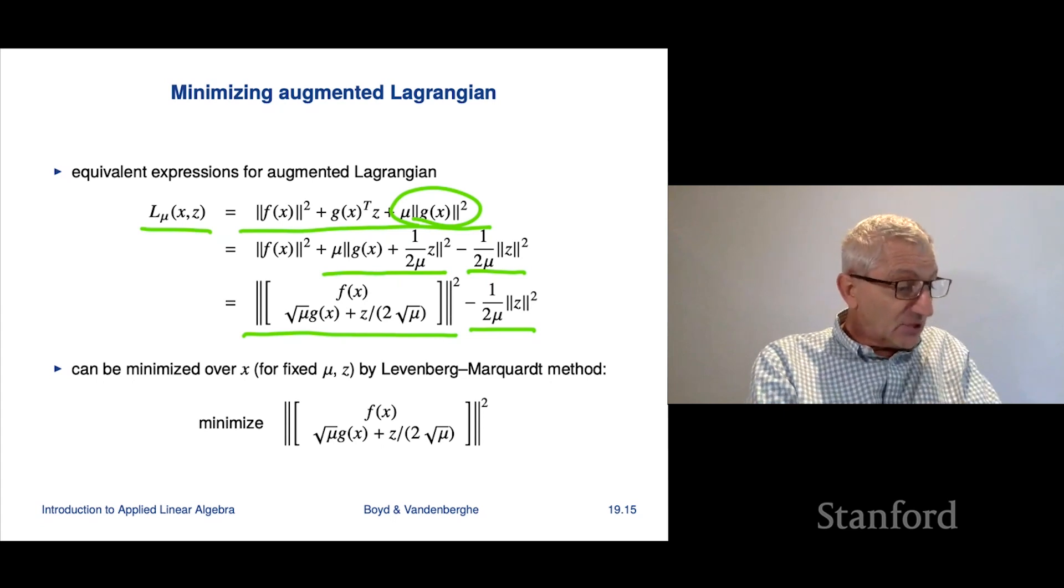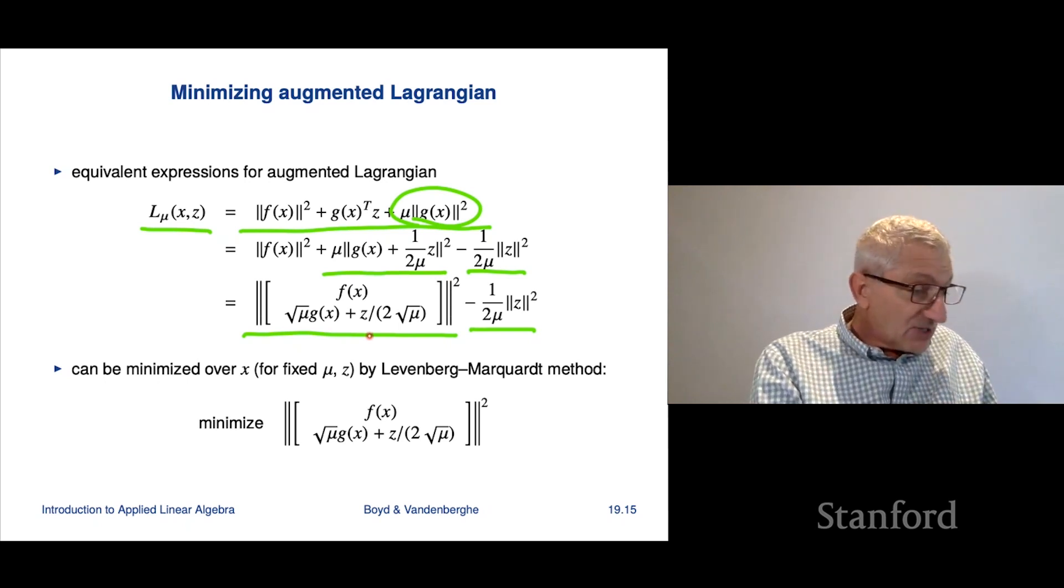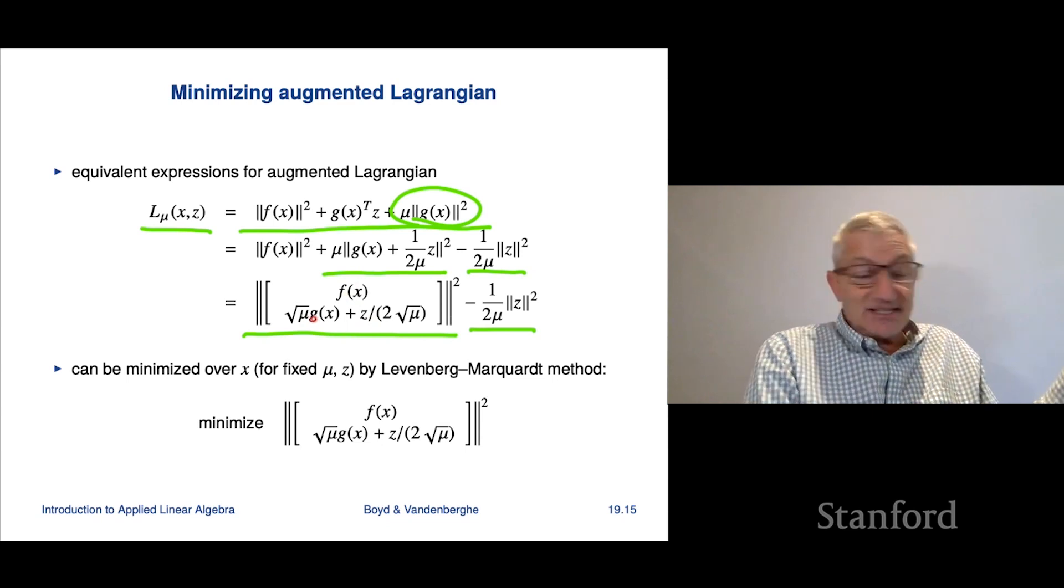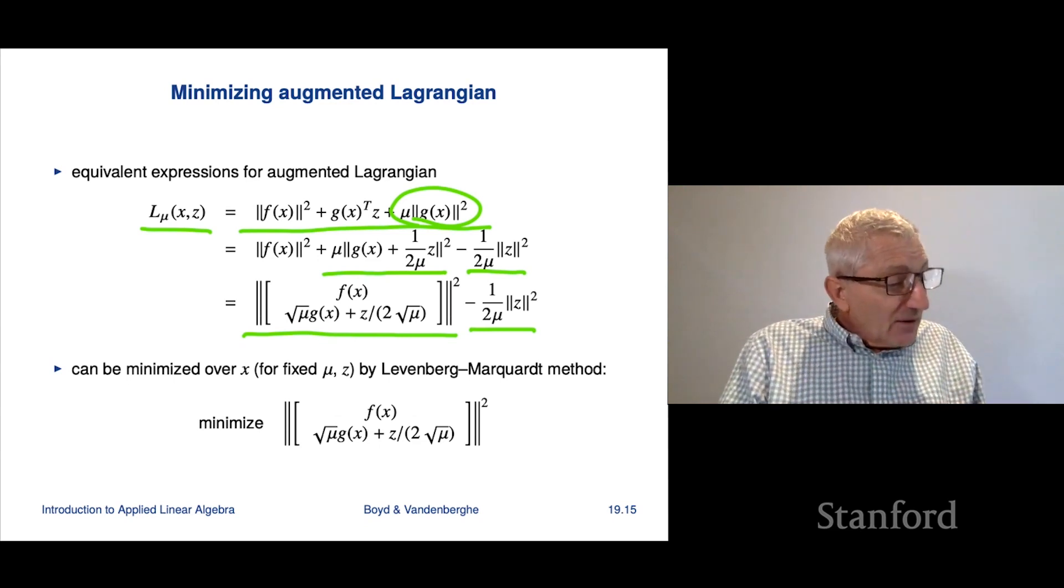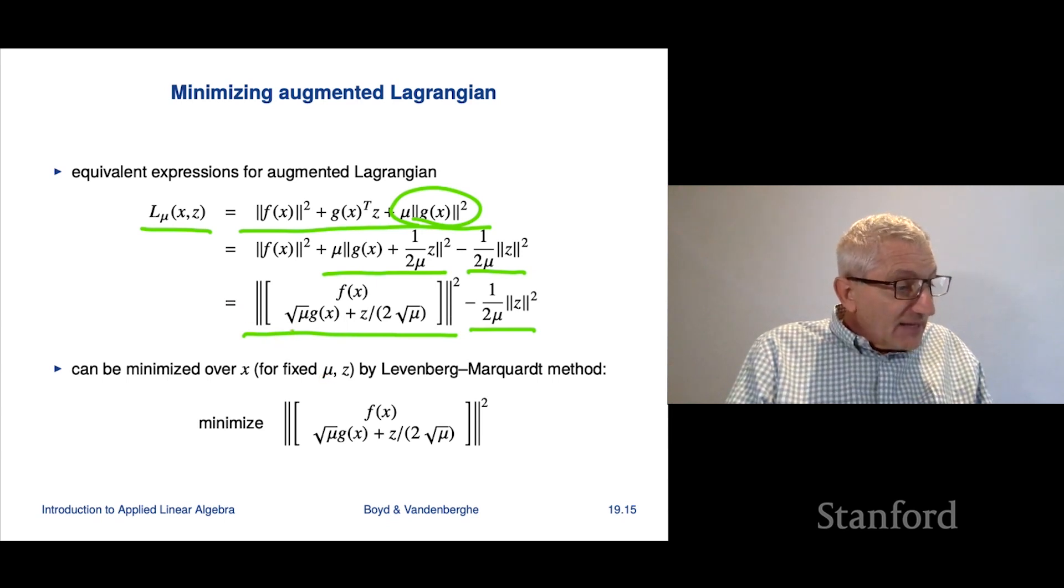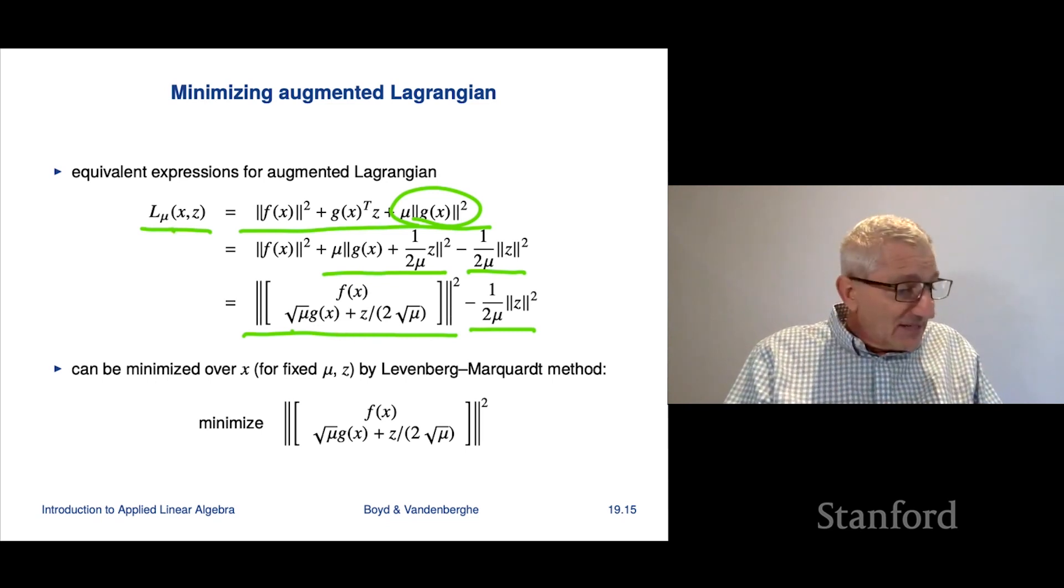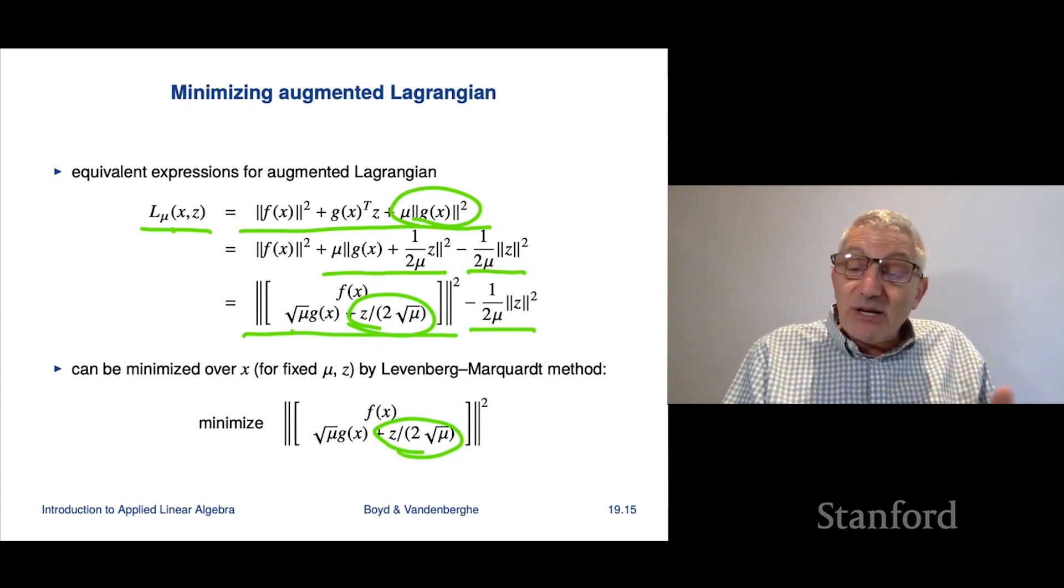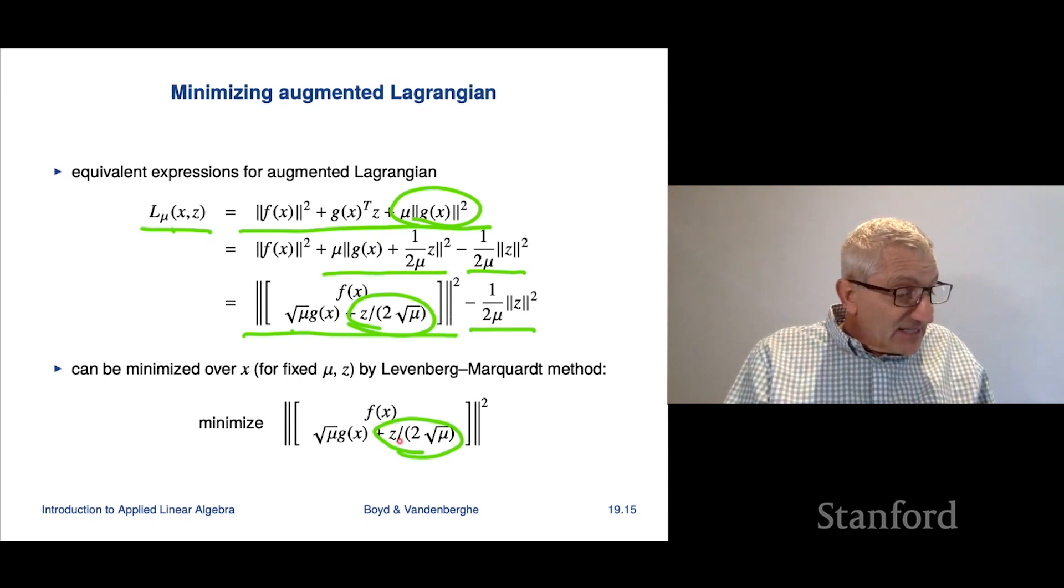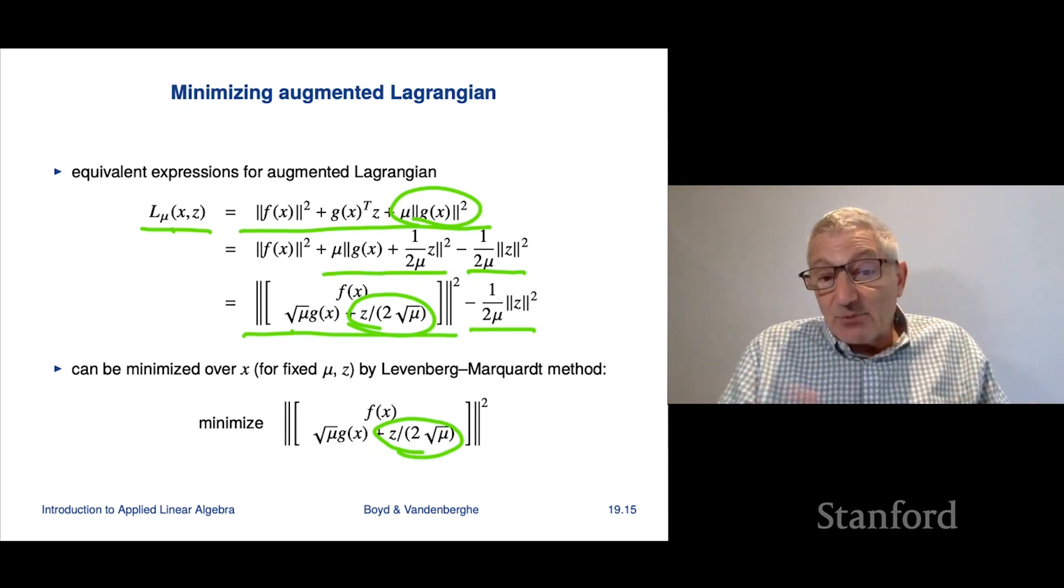This says that this augmented Lagrangian is gonna look like the norm squared. It's gonna look like a nonlinear least squares objective. That's this first part. And then minus a weird term that depends on z. Now let me make a couple of comments. First of all, it reduces absolutely correctly to the nonlinear penalty method. When I take z equals 0, this just reduces to the penalty method. That's 0, and over here this is just the stacked norm squared expression for the objective.